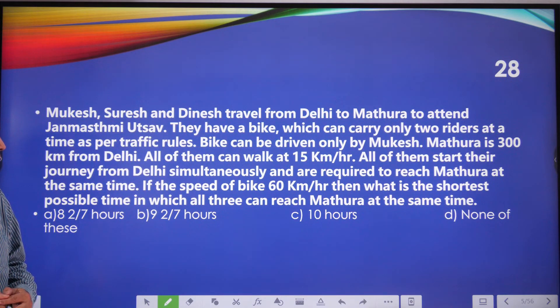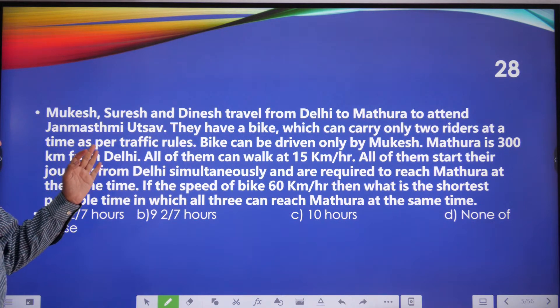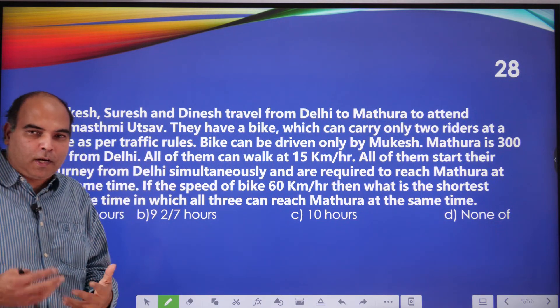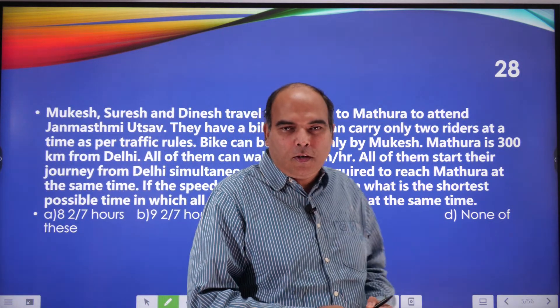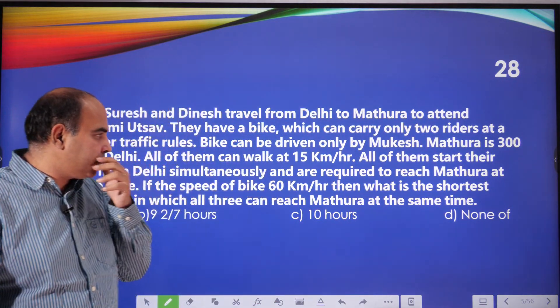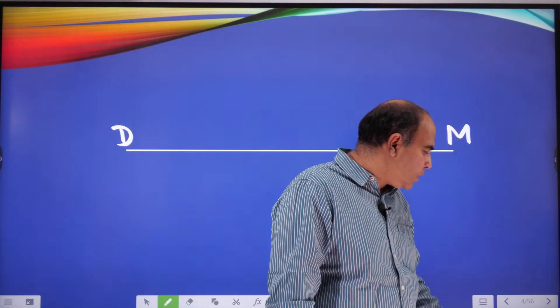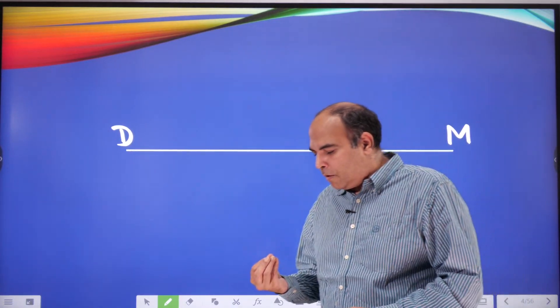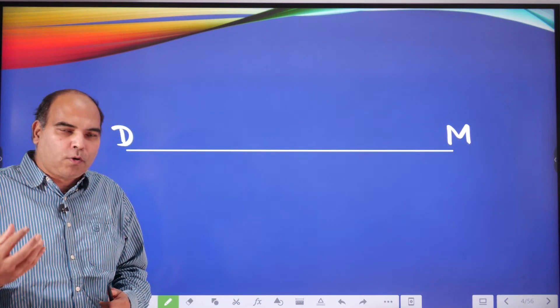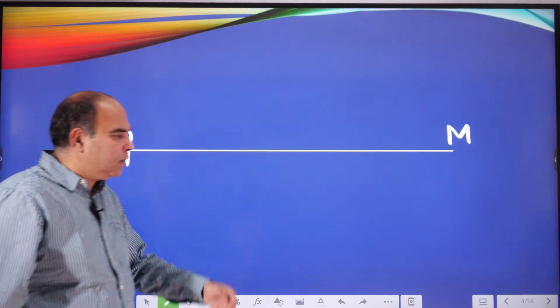So if you read this together, this says Mukesh, Suresh and Dinesh travel from Delhi to Mathura to attend Janmashtami Utsav. They have a bike which can carry only two people at a time as per traffic rules. So unlike what people in Delhi and Mathura do, these people are actually obeying traffic rules, right? And the bike can be driven only by Mukesh. Mathura is 300 kilometers from Delhi and all of them can walk at 15 kilometers per hour. In time-speed-distance whenever you're solving a question it's important for you to draw the picture of the movement because without a picture you don't get clarity with respect to what's happening. So let's say this is Delhi, that's Mathura.